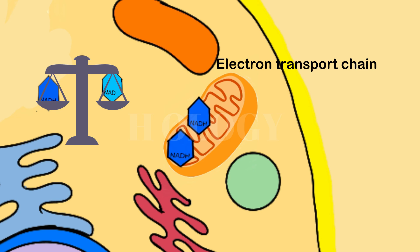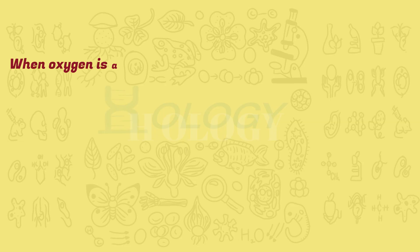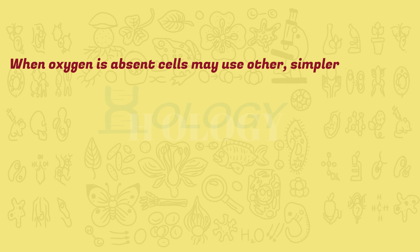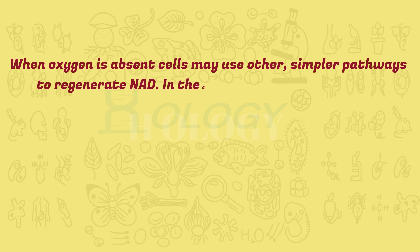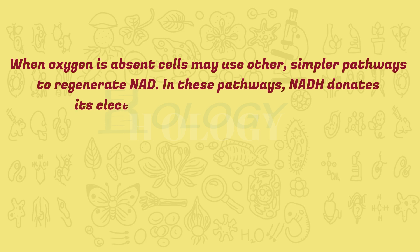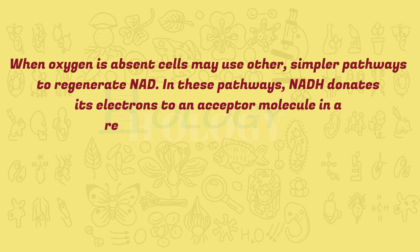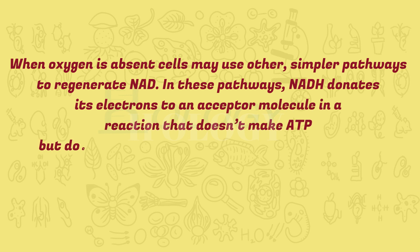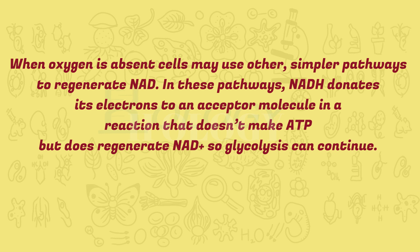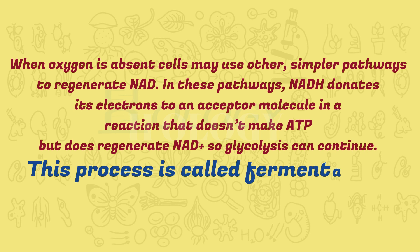So all cells need a way to turn NADH back into NAD⁺ to keep glycolysis going. When oxygen is absent, cells may use other, simpler pathways to regenerate NAD⁺. In these pathways, NADH donates its electrons to an acceptor molecule in a reaction that doesn't make ATP but does regenerate NAD⁺ so glycolysis can continue. This process is called fermentation.